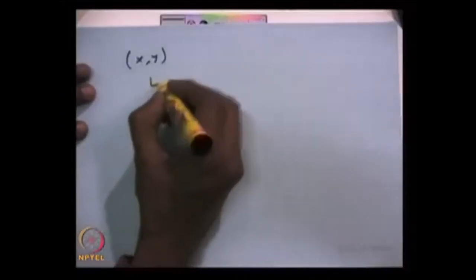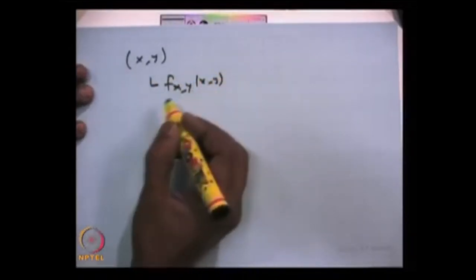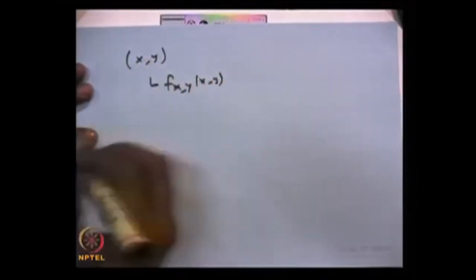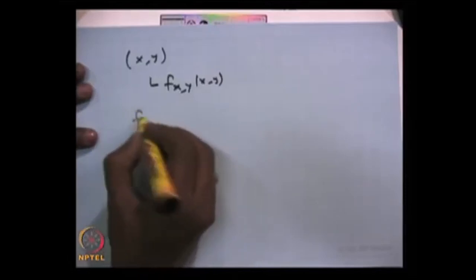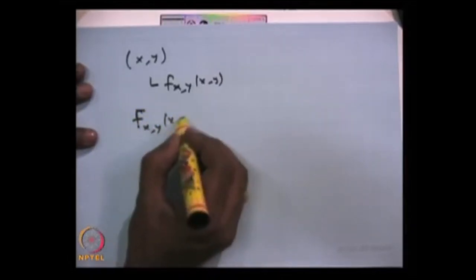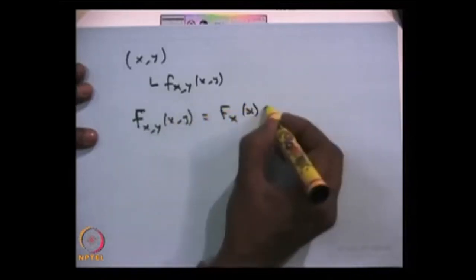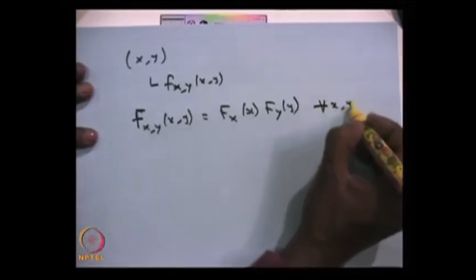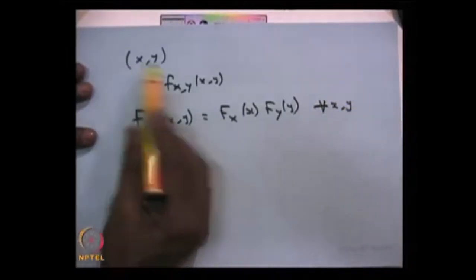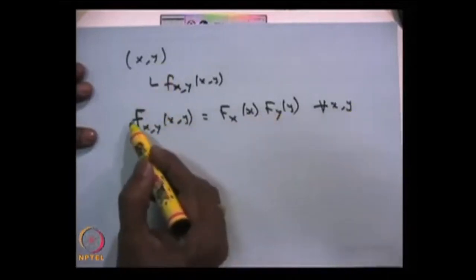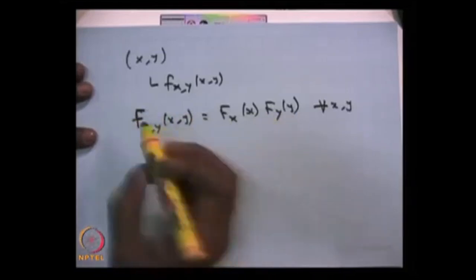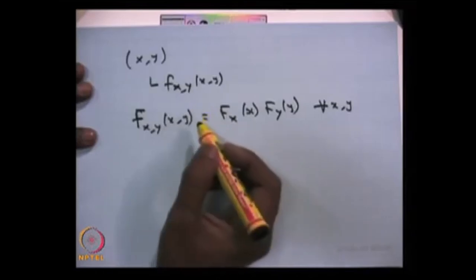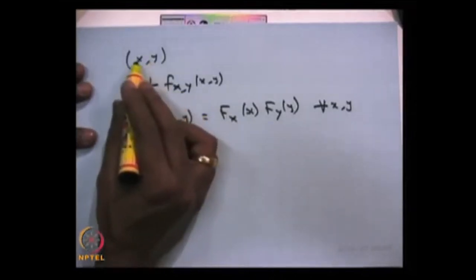I am going to discuss what is the meaning of independent random variables. Suppose you have two random variables X and Y and you know the joint probability density function or joint probability mass function based on whether both random variables are discrete or continuous. If both random variables are independent, then the CDF of this random vector is the same as the product of CDFs of individual random variables, and this is valid for all x, y. So if this condition is satisfied, then both random variables are called independent random variables.